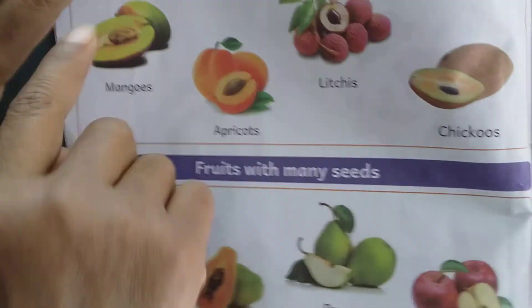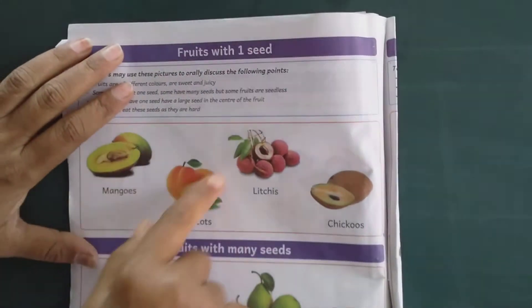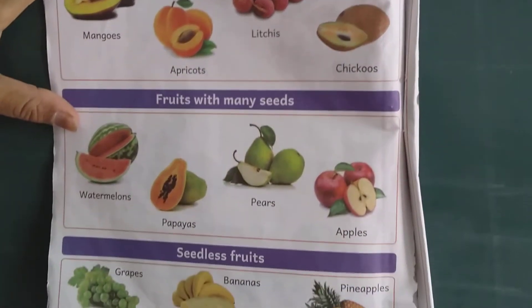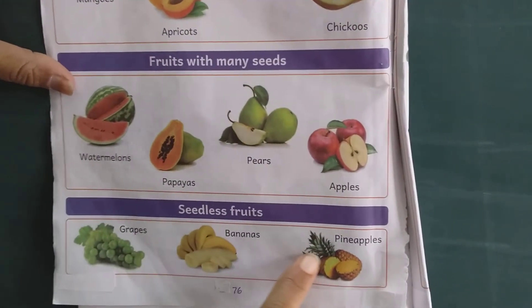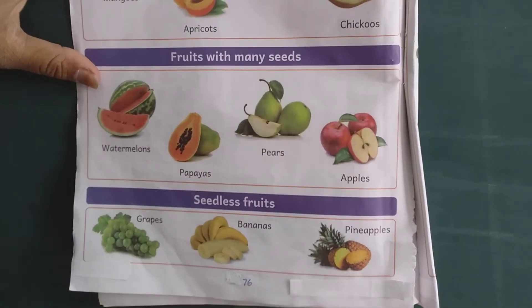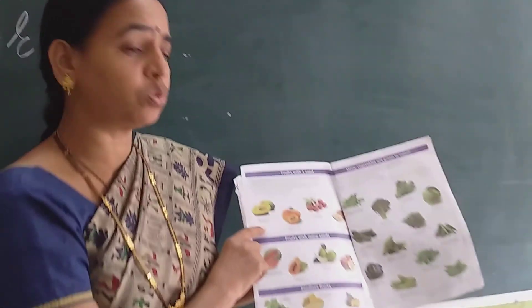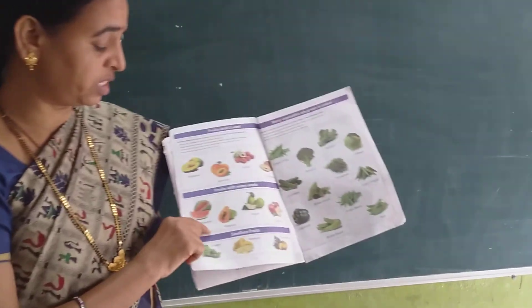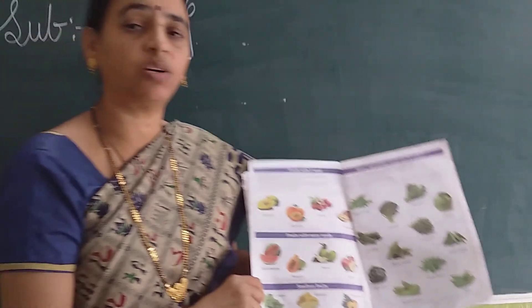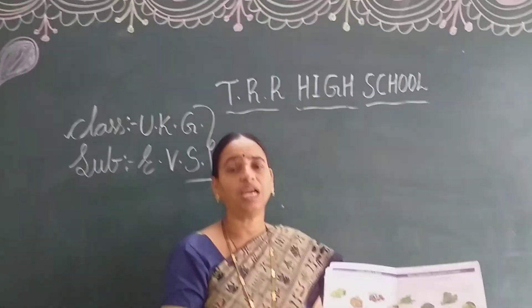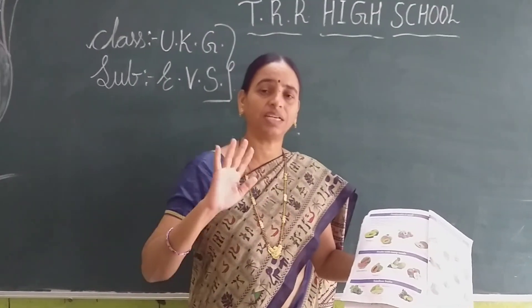Now, look at here once. These fruits are one seed fruits. And these fruits are many seeds fruits. And these are seedless fruits. Have you understood, children? Take out your worksheets and identify the fruits, and learn all these fruit names. Okay? This is our today's class. I will meet you in the next class. Bye, children.